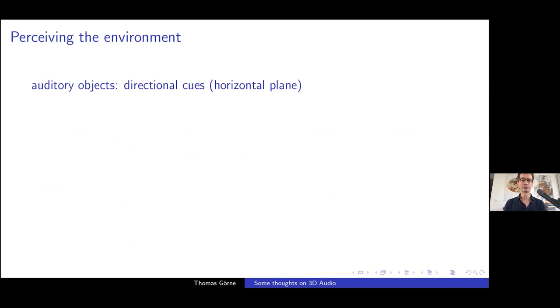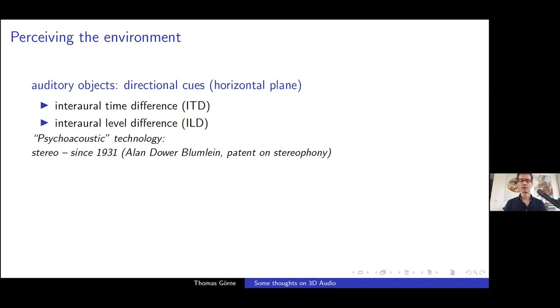So some short remarks on how we orientate in space, how we localize sound sources in the physical environment. In the horizontal plane, directional cues in the horizontal plane, the very well-known so-called spatial cues are number one, the inter-aural time difference, number two, the inter-aural level difference. This leads to technology with, I'm calling it here psychoacoustic technology, but it's like half physics, application of physics and half application of psychology. Best known stereo, the stereophonic recording and playback system, which was once 1931, invented by Alan Blumlein, BBC engineer, and he actually filed a patent on stereophony.